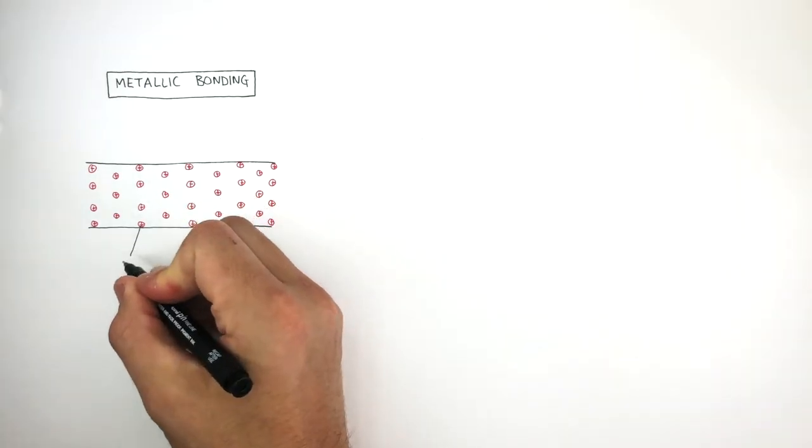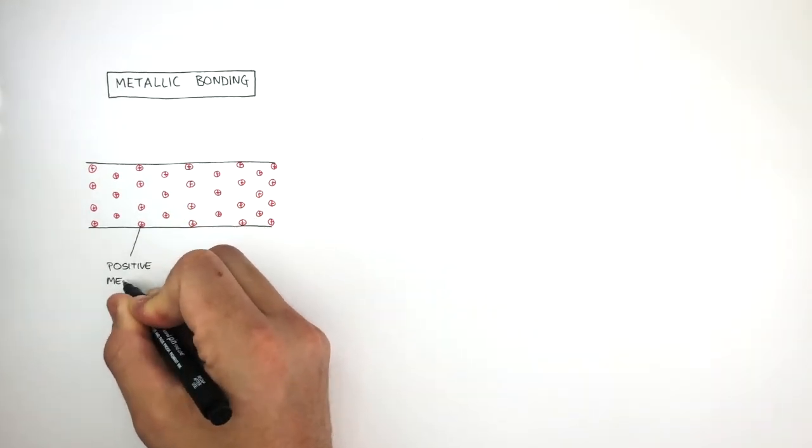To understand potential difference, we first need to recap metallic bonding. Here is a close-up of a metal wire where the red circles with crosses represent positive metal cations.